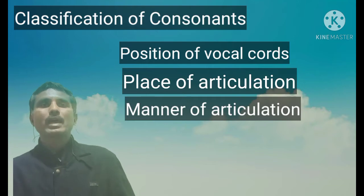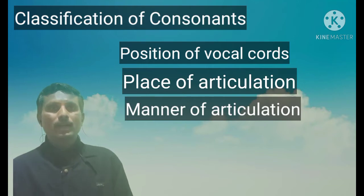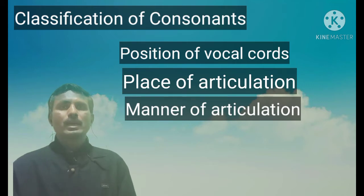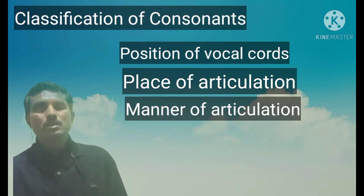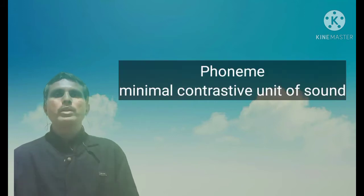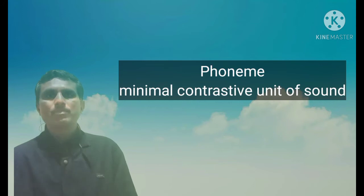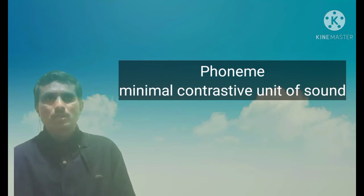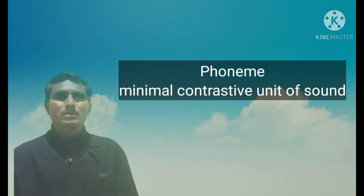So to remember: consonants are classified according to the position of vocal cords, the place of articulation, and the manner of articulation. A phoneme in English is a minimal contrastive unit of sound. When we describe a sound, we describe a phoneme in these three terms.